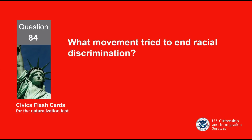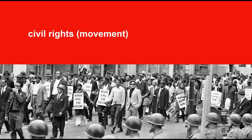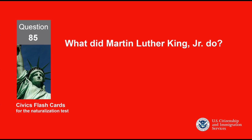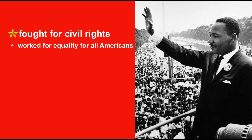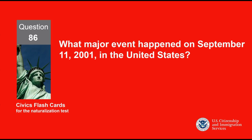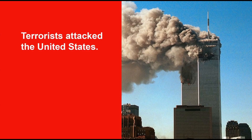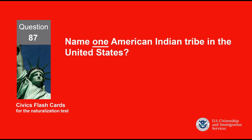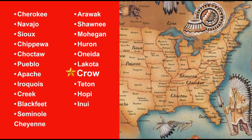What movement tried to end racial discrimination? Civil rights. What did Martin Luther King Jr. do? Fought for civil rights. What major event happened on September 11, 2001, in the United States? Terrorists attacked the United States. Name one American Indian tribe in the United States. Crow.